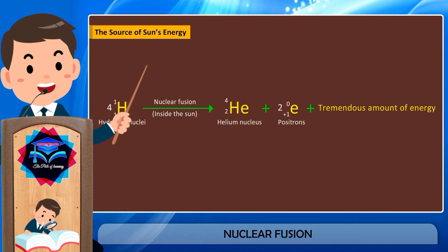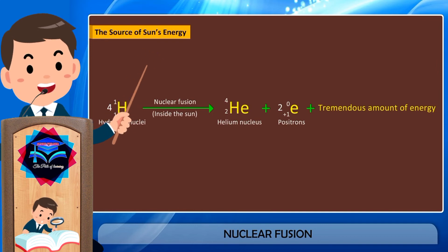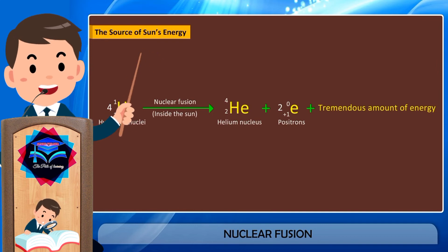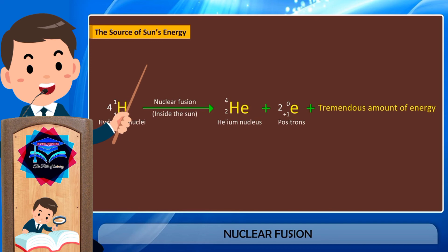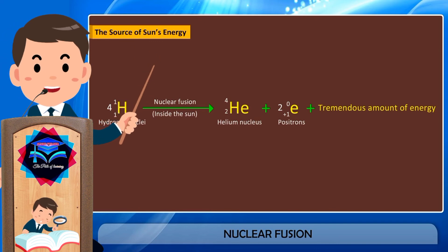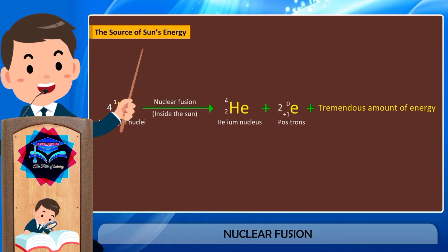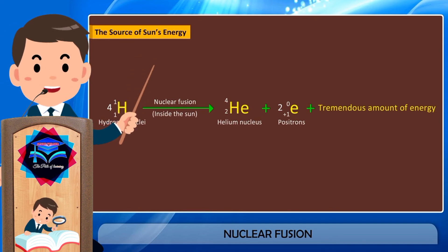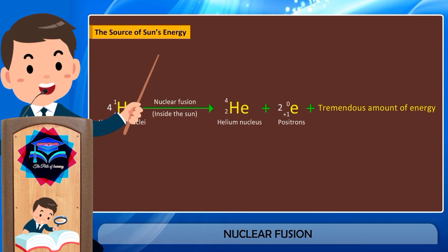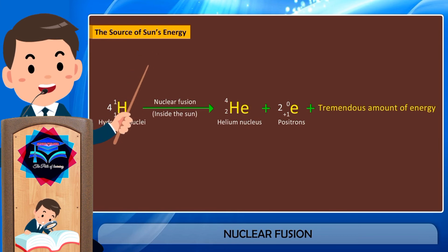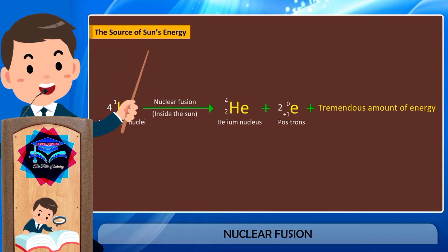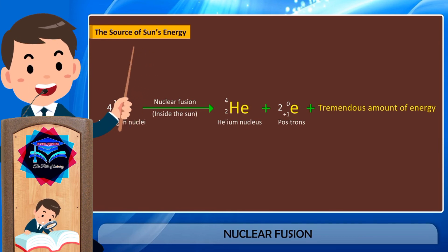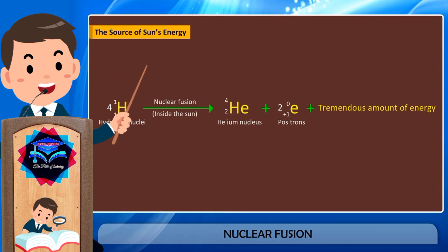The total energy produced by the fusion of hydrogen into helium is tremendous and is released in the form of heat and light. It is this energy which makes the sun shine and give us heat and light. These nuclear fusion reactions of hydrogen are the source of the sun's energy.